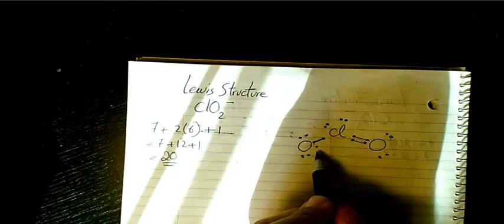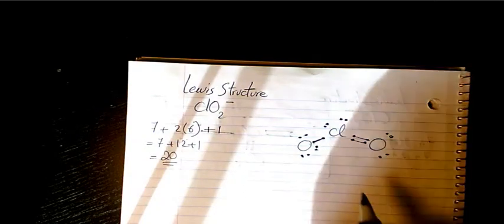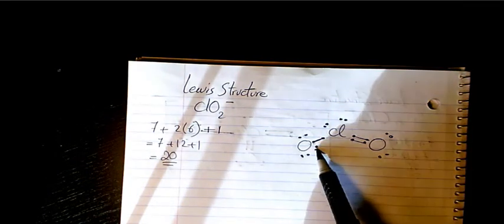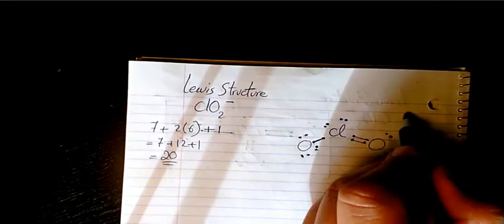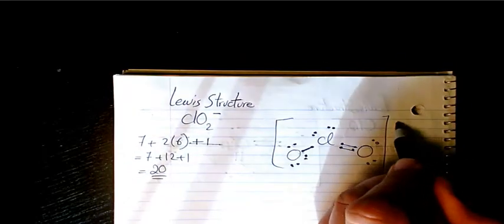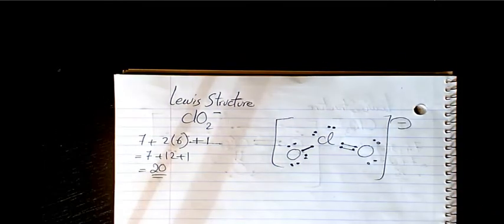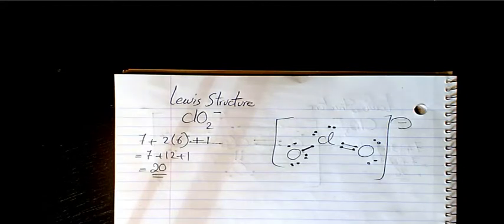We need one more electron to make it eight electrons, so we have two, four, six, and eight right now. So that's the Lewis structure for chlorite ion. I hope you like this video.